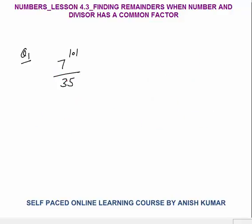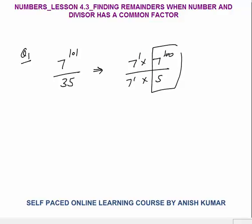Now question number 1 is 7 power 101 by 35. I am solving the first question; the next question you have to solve with me. You can see that 7 is common here. You can write 7 power 1 into 7 power 100, and 35 is 7 into 5. So I will keep the 7 aside and find the remainder when 7 power 100 is divided by 5.